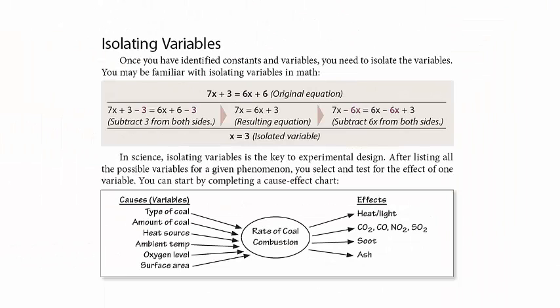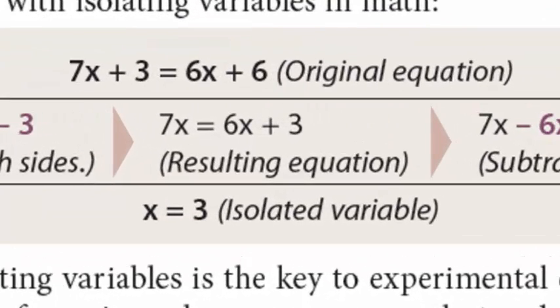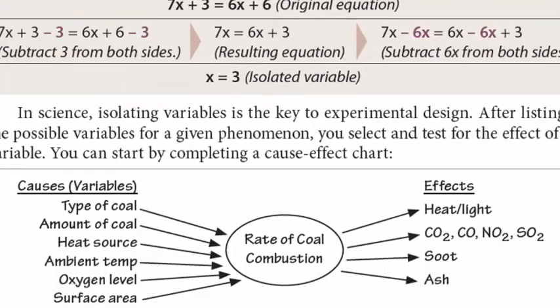Math has also taught us that if we can isolate a variable, we can solve a problem. Here, 7x and 6x need to appear on the same side of the equation so that we can solve for x.